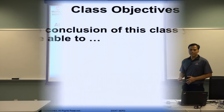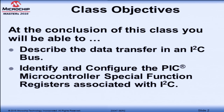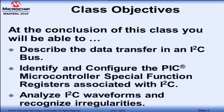At the end of this class, you should be able to describe the data transfer in an I squared C bus and identify the start, the stop, the data, the address byte. You should be able to identify and configure the registers — what we call SFRs or special function registers — with regards to I squared C, whether in master mode or slave mode. And you should be able to analyze I squared C waveforms, compare it to the code, and troubleshoot common I squared C failures.